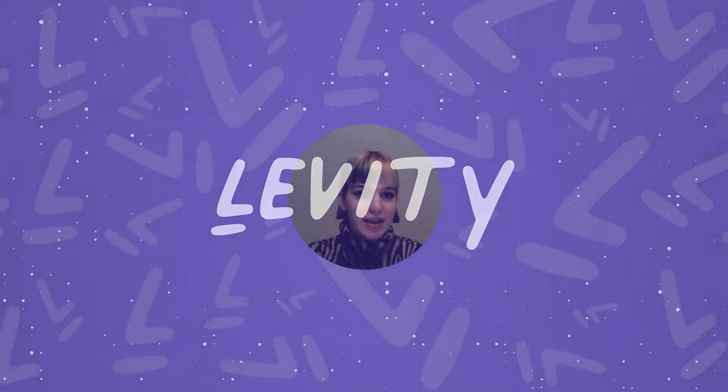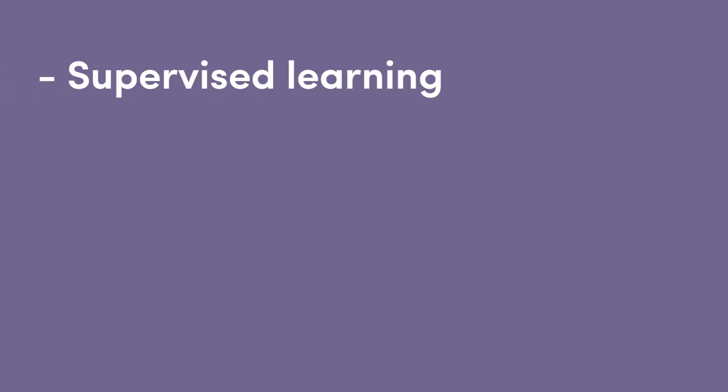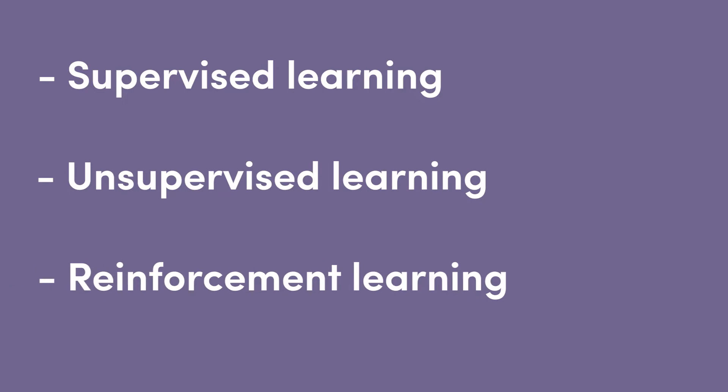Once you get into artificial intelligence and machine learning, there is no way to avoid three terms: supervised learning, unsupervised learning, and reinforcement learning. These are the three most common ways machines can learn. Therefore, understanding their meaning and differences is important when getting started with artificial intelligence. There are also other ways for machines to learn, but those aren't necessary when starting out — when you need them, you'll know.